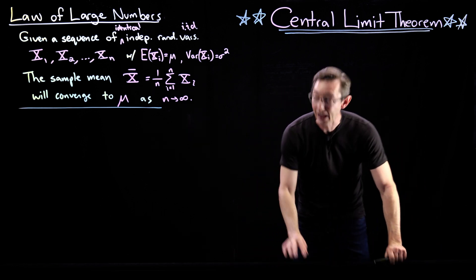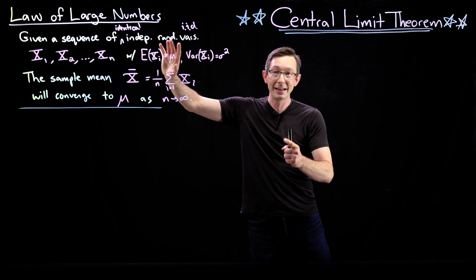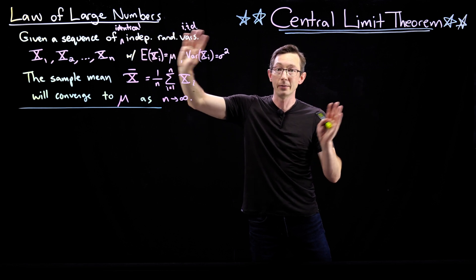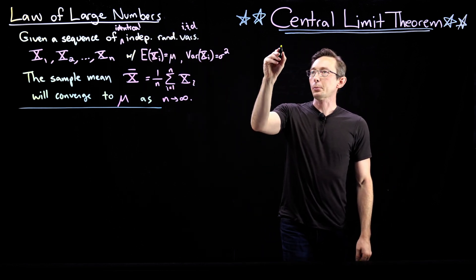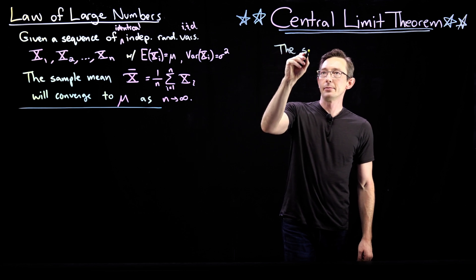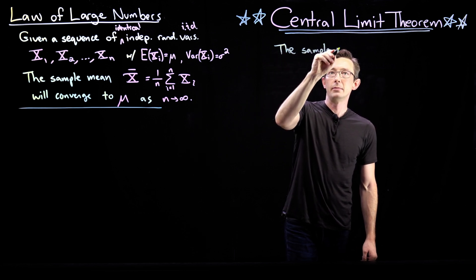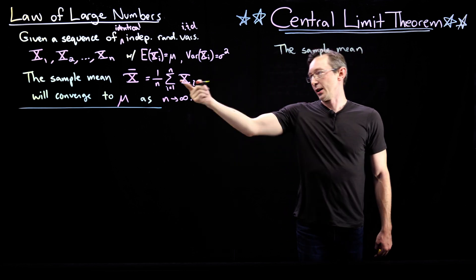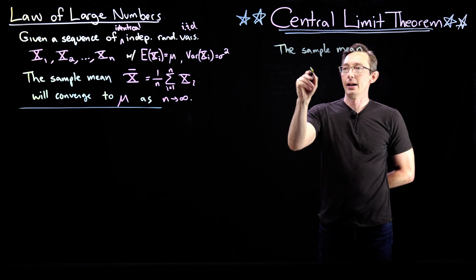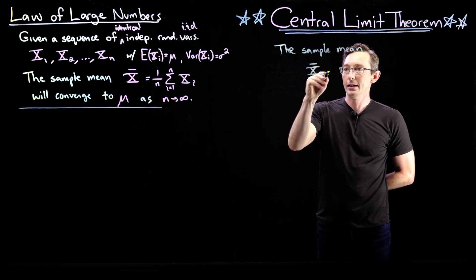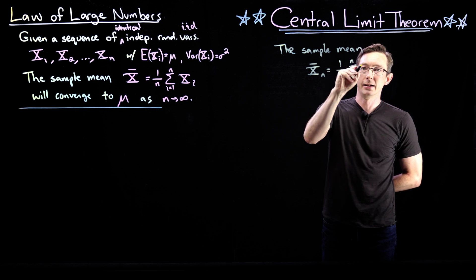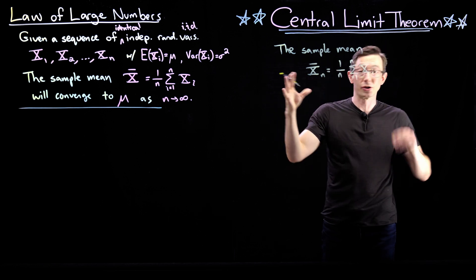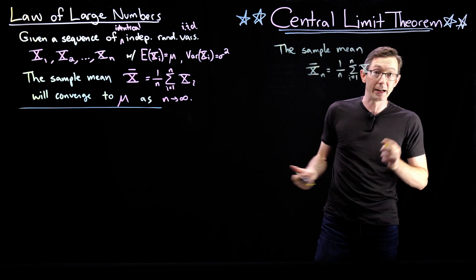The central limit theorem has the same basic assumptions. We have n identical independent random variables. And what it says is that the sample mean, which again is just x bar n equals one over n sum i equals one to n of all of my independent trials. It's just literally the mean of all of my data.